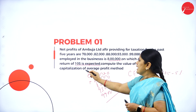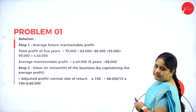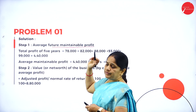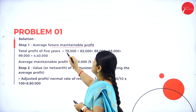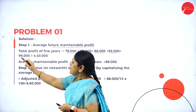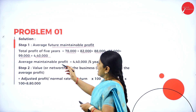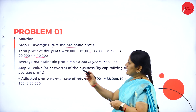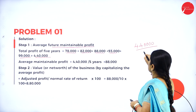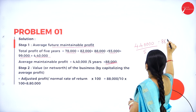Compute the value of goodwill as per the capitalization of average profit method. First, we calculate the average future maintainable profit. The total profit of 5 years: 78,000 plus 82,000 plus 80,000 plus 93,000 plus 99,000 equals 4,40,000. Then the average maintainable profit is 4,40,000 divided by 5, which gives 88,000.